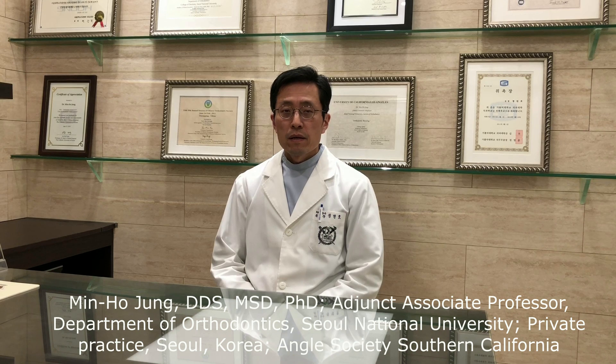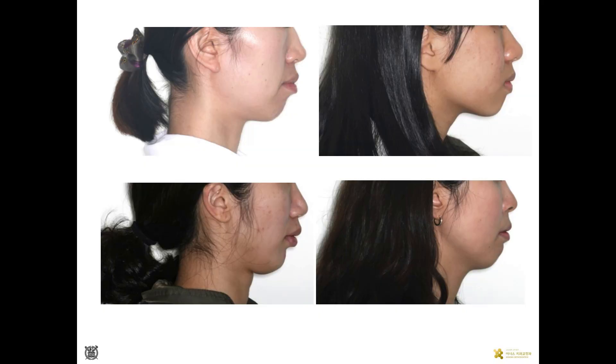Hi, I'm Minho Jung from Seoul, Korea. Class II malocclusion is one of the common problems in our field, and some of the Class II patients have chin deficiency. Chin deficiency can be produced by excessive vertical growth or by a small mandible. What are your treatment options for chin deficiency?